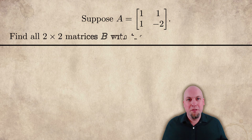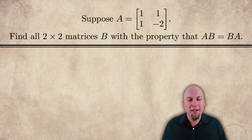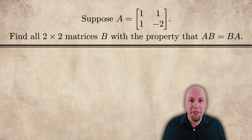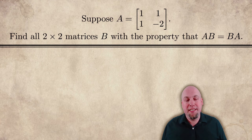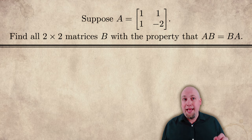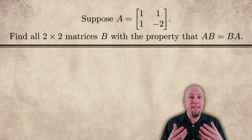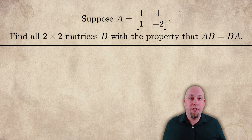So suppose that we're given the matrix A, which is [[1, 1], [1, -2]], and we want to find all matrices that commute with it. We want to find all matrices B with the property that A times B equals B times A. We're going to use our sledgehammer — linear systems — which are the tool that solve all of our problems in linear algebra.